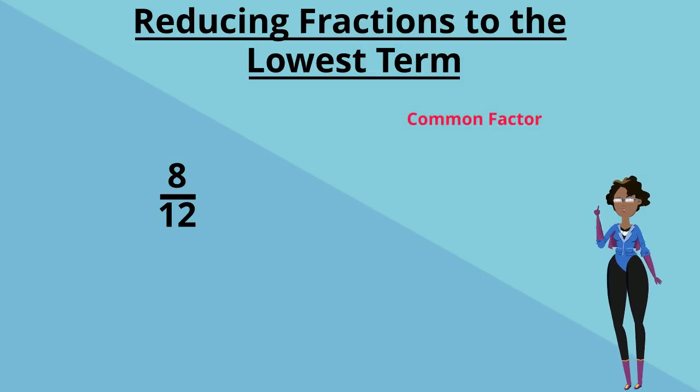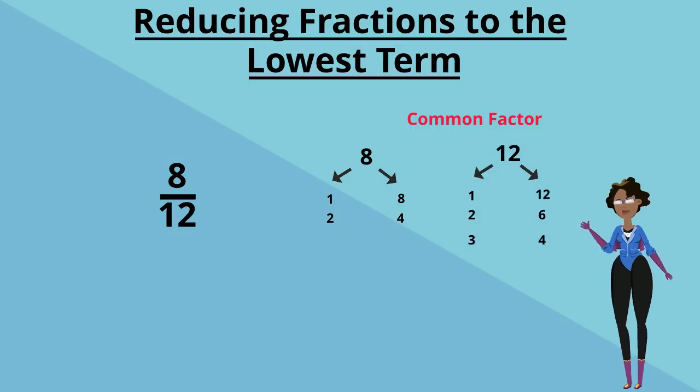Let's list our factors of 8. 2, 4 and 8. And let's list our factors of 12. 2, 4, 6 and 12. So what are the common factors? That's right, 2 and 4.